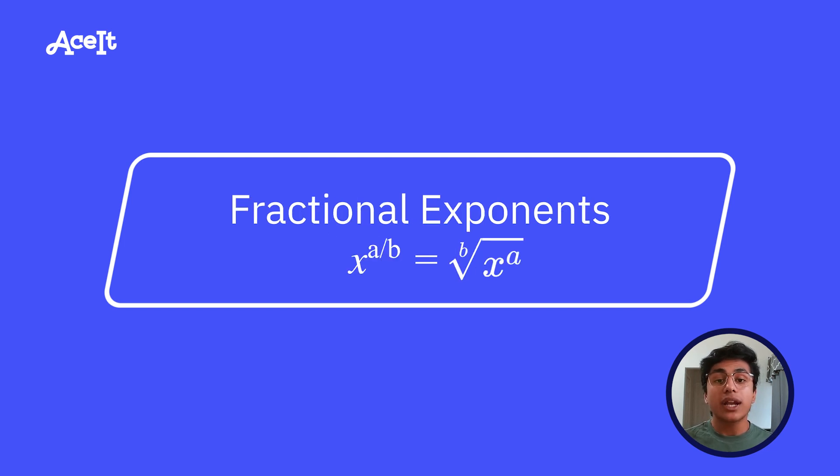The final rule we have is the one involving fractional exponents. In these cases, you're going to raise the base to the power of the numerator, and then take the root of the denominator. If x is raised to the power of a over b, we would get the b root of x to the a. So a quick example of this is if we have four raised to the power of one half. That would give us the square root of four to the first power, which would leave us with two.